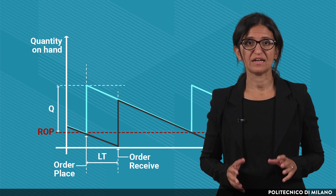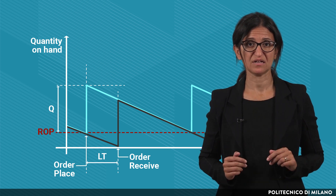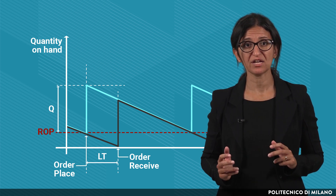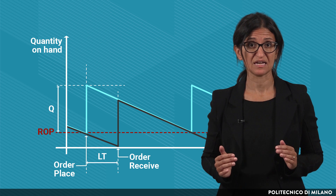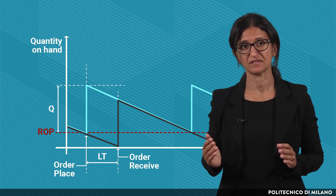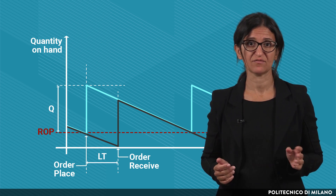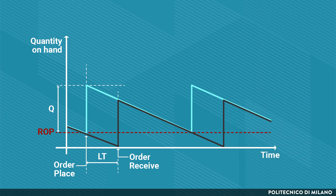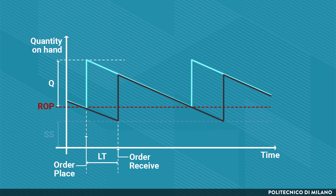Therefore, in order to consider the uncertainty, we need to change the graphs we have previously seen for the expected inventory level and the expected availability. More specifically, they should be moved up by a quantity equal to the safety stocks.